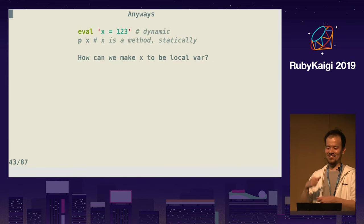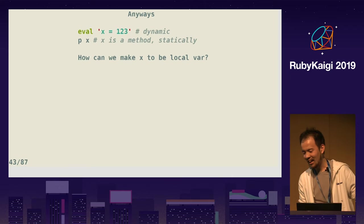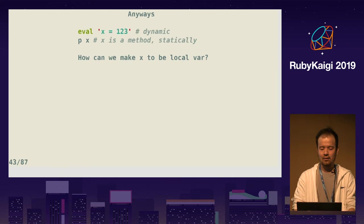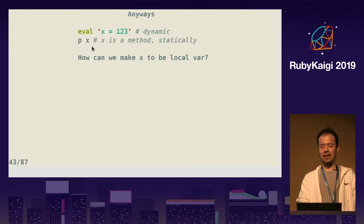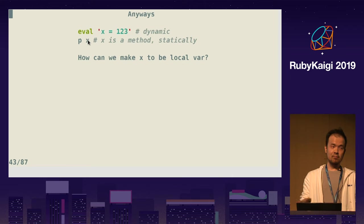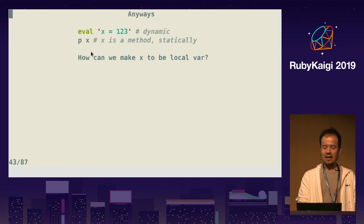Anyway, let's go back to the original question. This does not work again because x is a local variable, statically — period. At runtime, x is a local variable; x is a method call, so this does not work. So how can we change that?